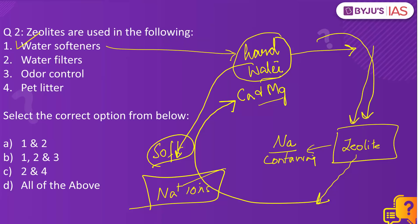Zeolites are also used as water filters, and in odor control and as pet litters. Because of their porous properties, they are able to trap odor and unwanted liquid. So zeolites are used in all of the above — D is the right answer.